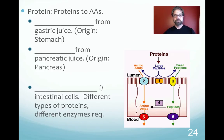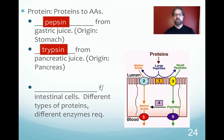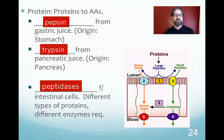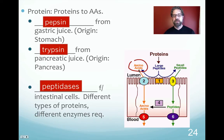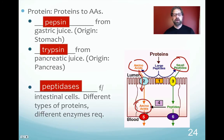Proteins are broken down by pepsin from gastric juice, trypsin from pancreatic juice, and peptidases from intestinal cells. Large macromolecules can't be absorbed until they're reduced to single or just a couple of amino acids. Amino acids are transported into intestinal cells via protein carriers. Some small peptides — dipeptides or tripeptides — have their own transporters and are eventually broken into single amino acids before entering the bloodstream.